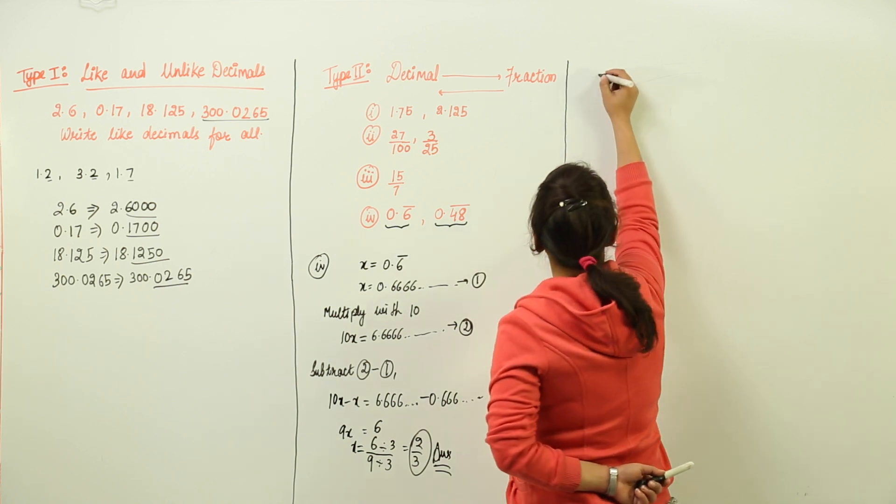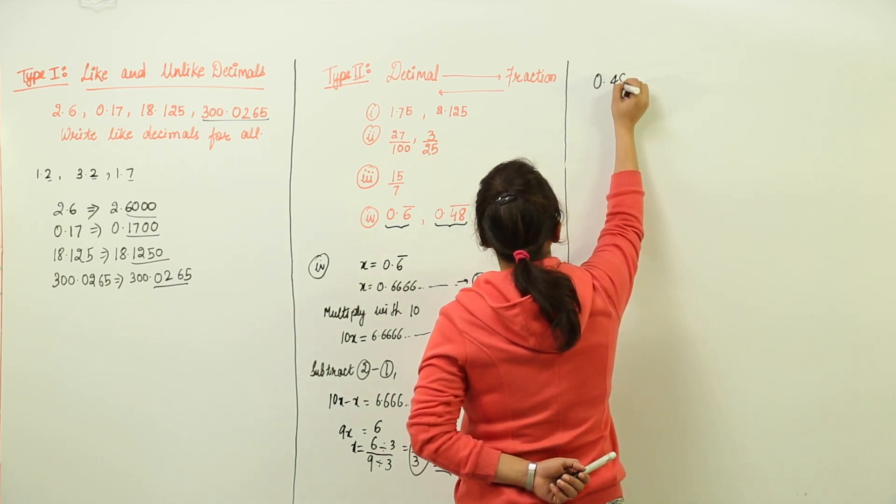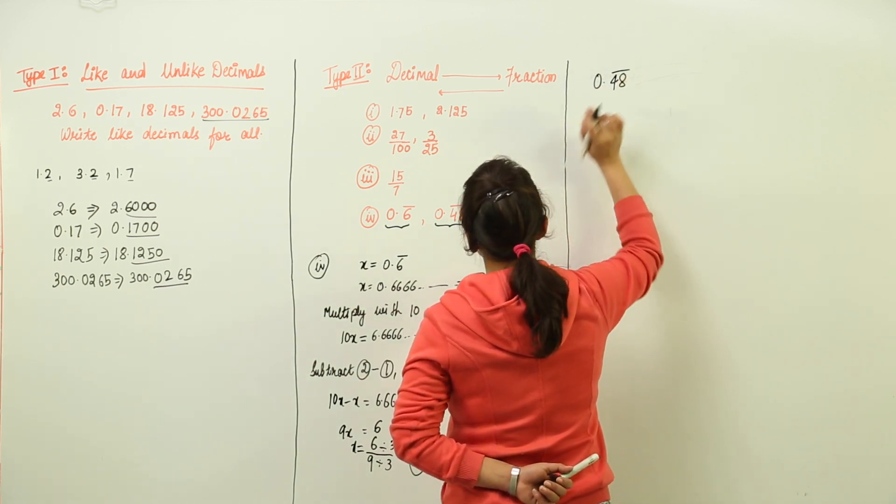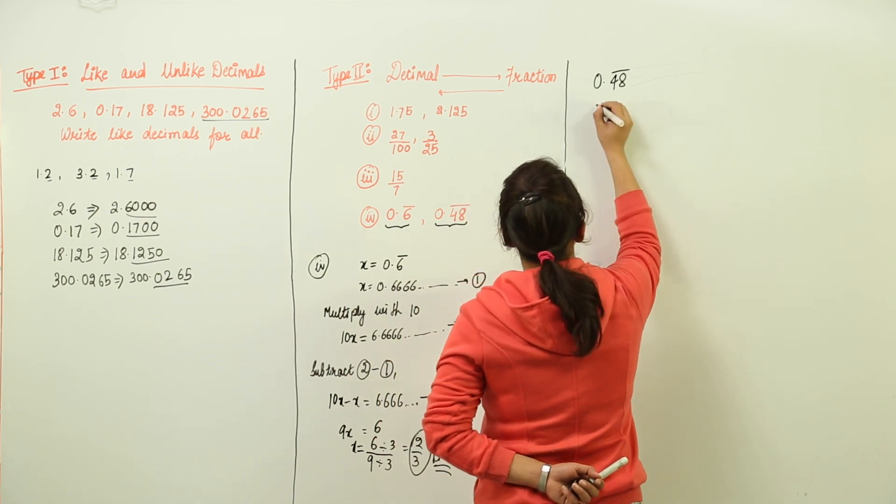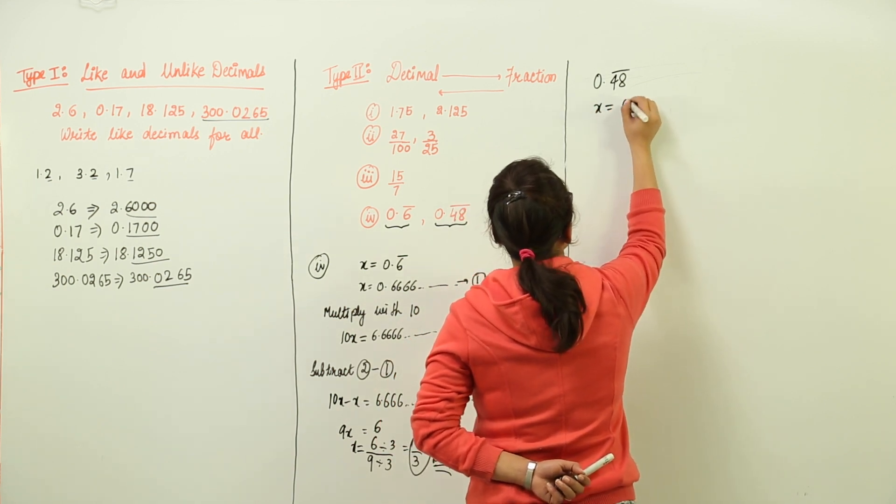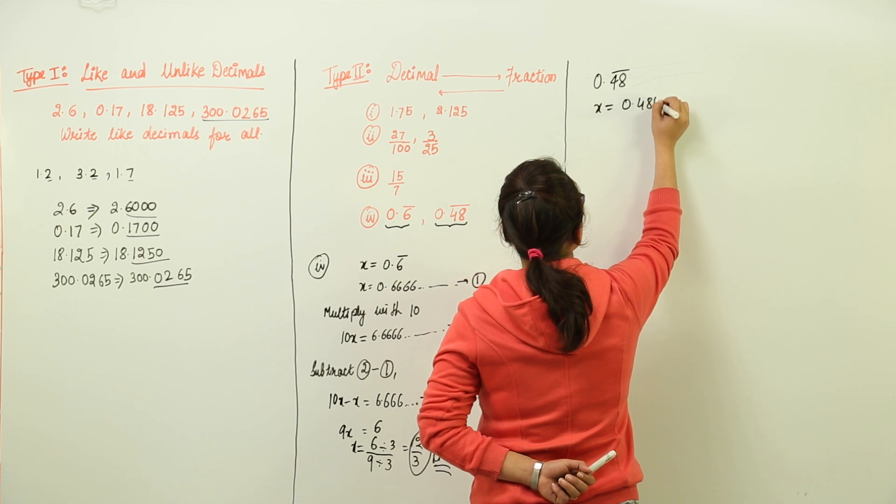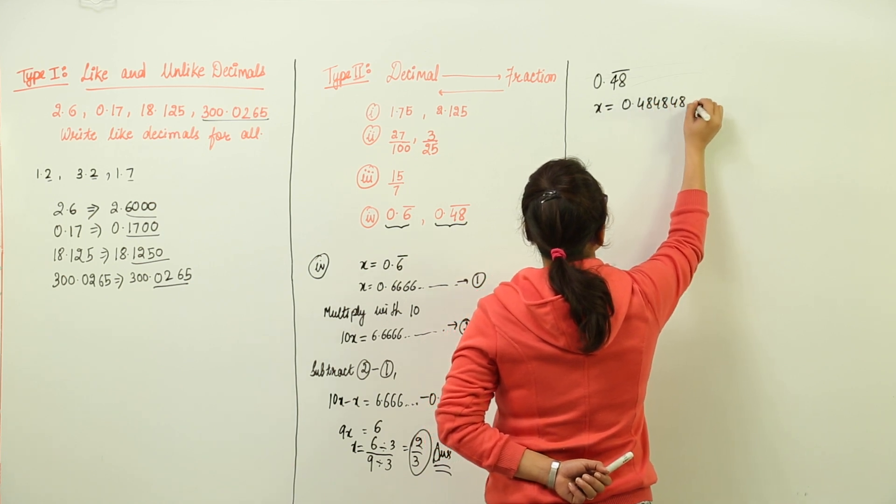Similarly, the last part is having 0.48 bar. Now the bar is on 2 digits. So how do we represent it? x is equal to 0.484848 going on.